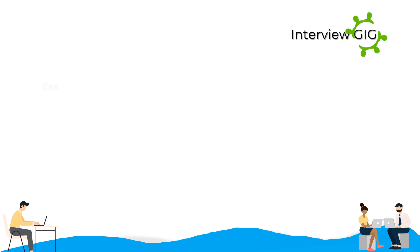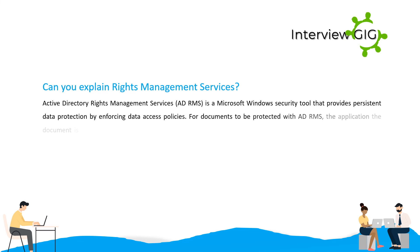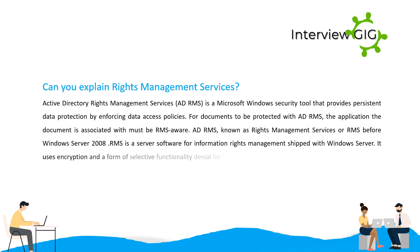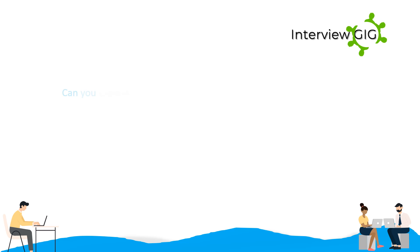An automated monitoring system provides necessary consolidation and timely problem resolution to administer Active Directory successfully. Active Directory Rights Management Services is a Microsoft Windows security tool that provides persistent data protection by enforcing data access policies. For documents to be protected with AD RMS, the application the document is associated with must be RMS aware. AD RMS, known as Rights Management Services or RMS before Windows Server 2008, is server software for information rights management shipped with Windows Server. It uses encryption and a form of selective functionality denial for limiting access to documents such as corporate emails, Microsoft Word documents, and web pages, and the operations authorized users can perform on them.